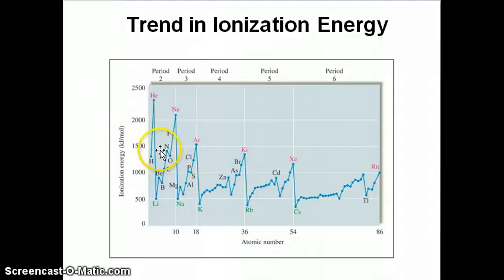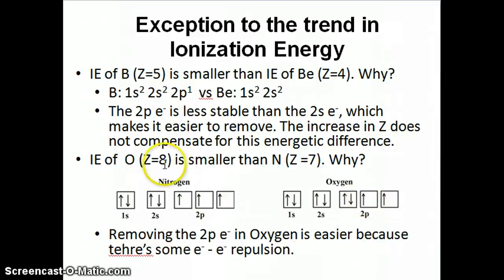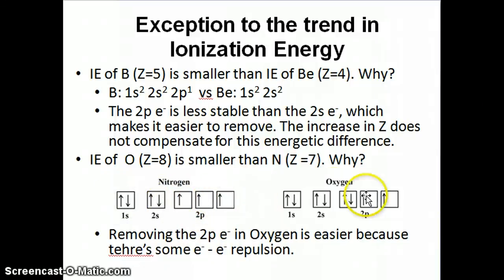From nitrogen to oxygen we again expect an increase in ionization energy, but we see a decrease. You can pause the video and think about how to explain this exception. I'd start with electron configuration — that's really the basis for explaining all of these cases. I'm using the box diagram here because I want to highlight certain things about the electron configuration that I can't show with the written form.